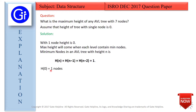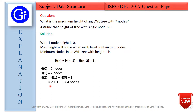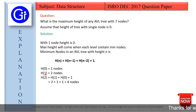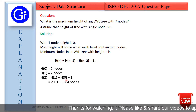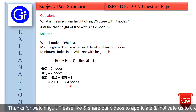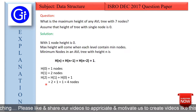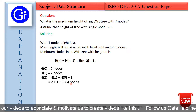At height 0 the minimum number of nodes required is 1, and at height 1 the minimum number of nodes required is 2. For height 2, the formula gives H(1) + H(0) + 1, which is 2 + 1 + 1 = 4 nodes. So at height 2 the minimum number of nodes required is 4.